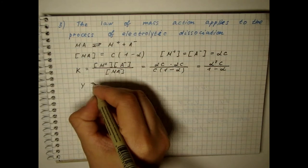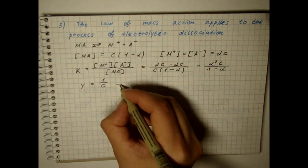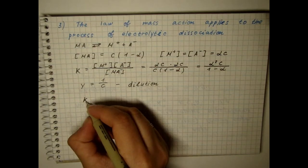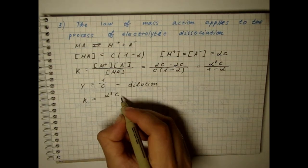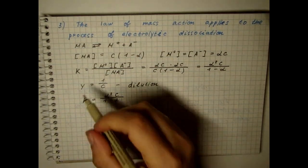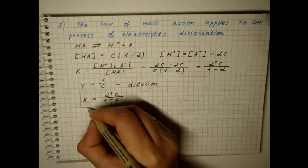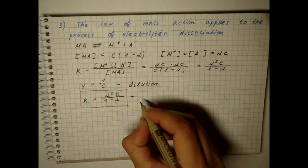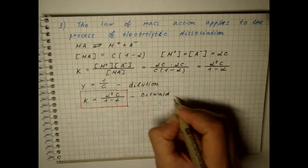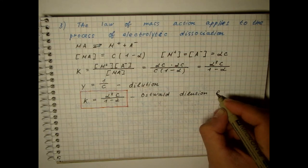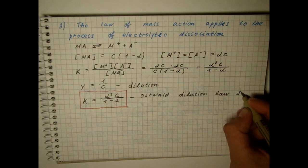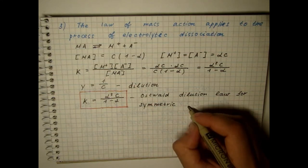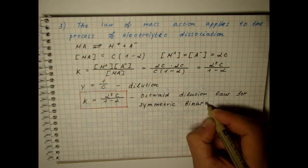Since the reciprocal of the molar concentration is called dilution, this equation is called the Ostwald Dilution Law. However, it should be noted that this equation is valid only for symmetric binary electrolytes, when one electrolyte molecule gives one cation and one anion.